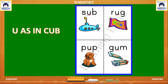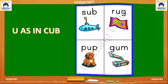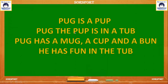Next we can read a few lines related to U. Pug is a pup. Pug the pup is in a tub. Pug has a mug, a cup, and a bun. He has fun in the tub. Now we can start marking the three-letter words which have U in the middle — like pug, pup, tub, mug, cup, bun, fun. These are the words which have U in the middle.